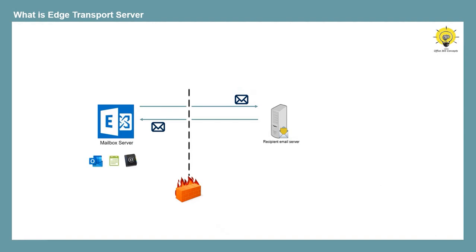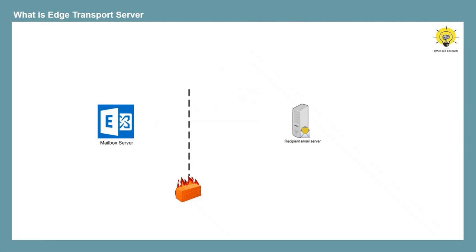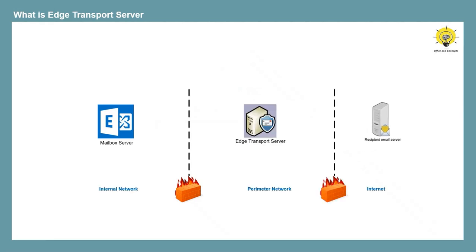Exchange Server stores a large amount of information — users' emails, address book, calendars, hundreds and thousands of mailboxes and public folders, and there could be confidential information as well. So if we are exposing the mailbox server to the internet, this can lead to a security threat. This is where Edge Transport Server comes into the picture.